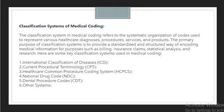The primary purpose of a classification system is to provide a standardized and structured way of encoding medical information for purposes such as billing, insurance claims, statistical analysis, and research. To complete all these processes and provide better service to patients or insurance companies, we use these classification systems which provide a structured way for encoding medical information that is then used to process claims.